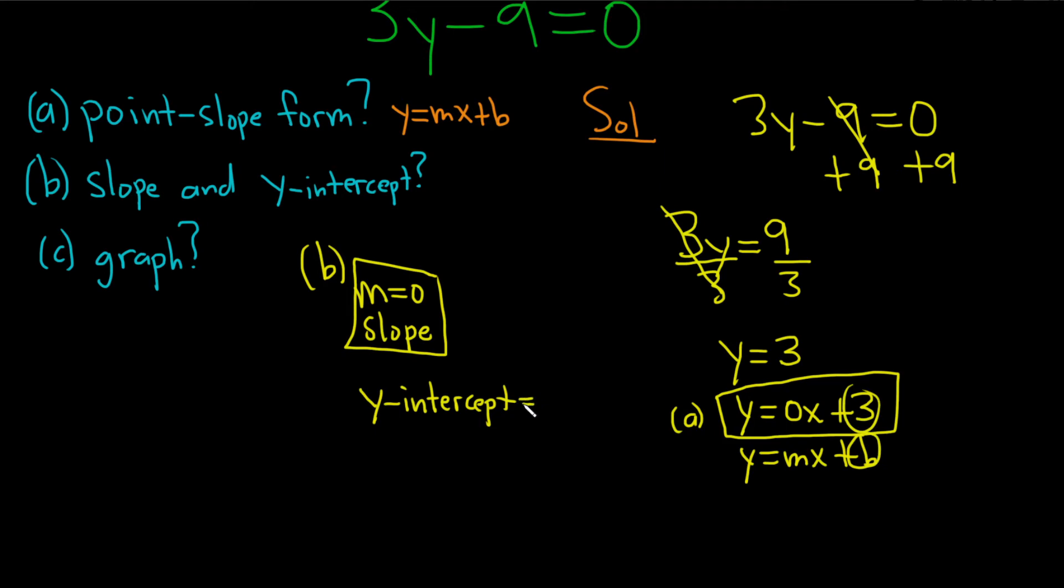As an ordered pair, it's y equals 3, so the y-coordinate is 3, and the x-coordinate is always 0. So that would be that there.